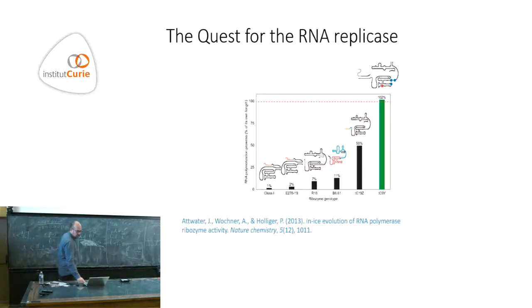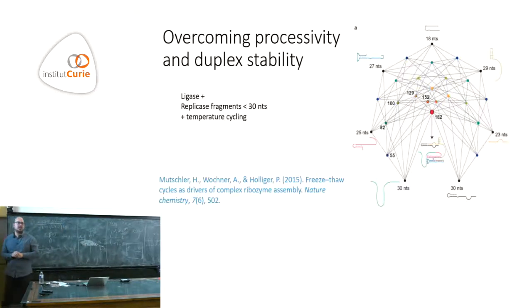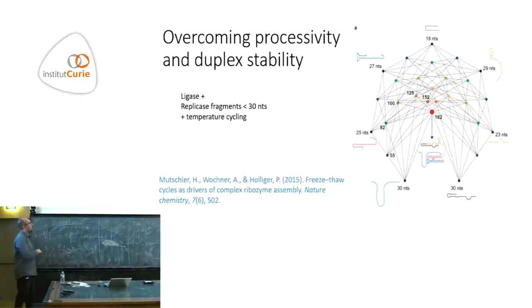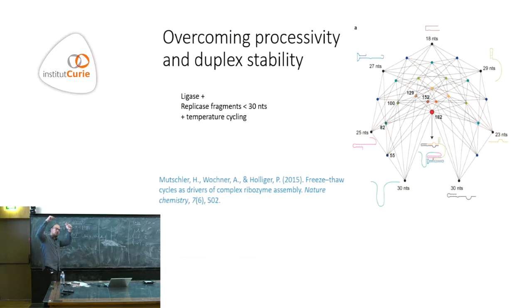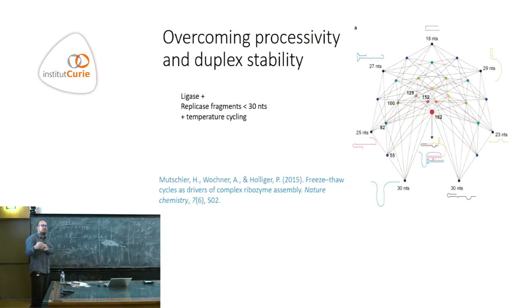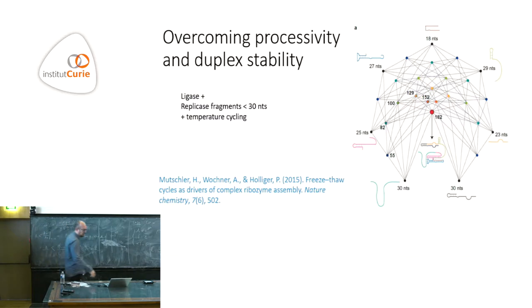The group of Phil Holliger is still working under this type of protocol. The current status is that all single steps are possible, but they don't work together — none of them is efficient enough to have a really self-reproducing system. Another key challenge is duplex stability: the big problem of replication is that you need to separate the strands, but you have the strongest possible complementarity between the two long strands. Temperature cycling allows separation of smaller things. Another approach is using triplets rather than nucleotides — a recent article shows that triplets can invade secondary structures, allowing replication of small parts of the molecule.